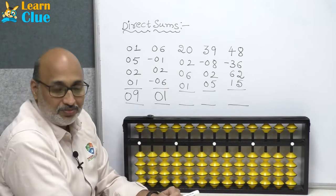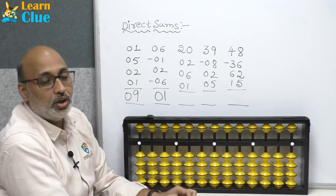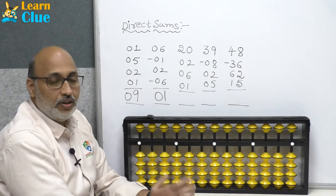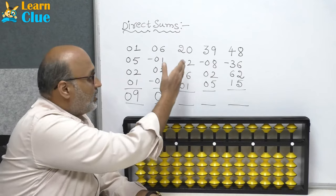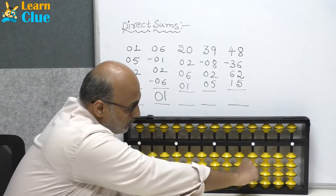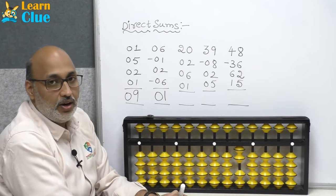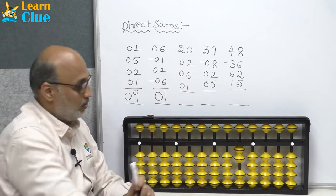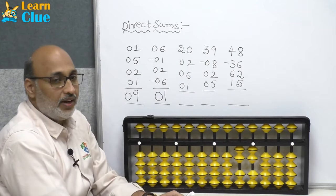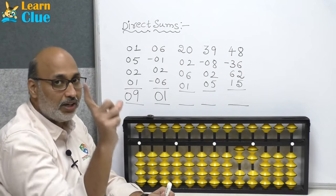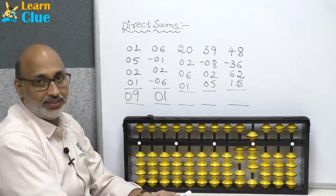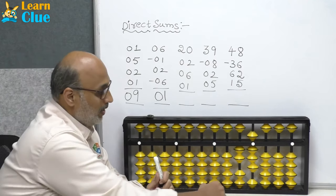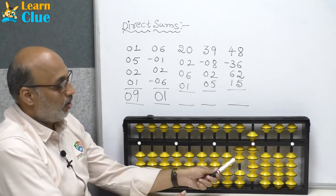Next problem: 20. On the abacus, place beads from left to right, highest denomination first. The highest denomination is 20 — pull 2 earth beads in the tens place, making 20. Now they are asking plus 2 in ones place — beads are available. Plus 6 — six is a butterfly number. Plus 1 — beads are pretty available.